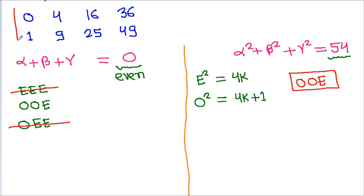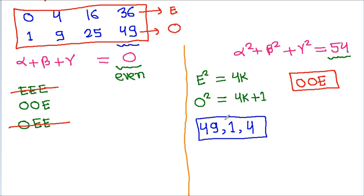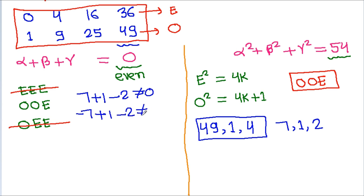By hit-and-trial, the possible perfect squares up to 54 are: 0, 1, 4, 9, 16, 25, 36, 49 (64 > 54). Starting with 49: taking 49 + 1 + 4 = 54 gives numbers 7, 1, 2 — but we cannot get 7 + 1 - 2 = 0, or -7 + 1 - 2 = 0, or 7 - 1 - 2 = 0, so this is not possible. Starting with 25: taking 25 + 25 + 4 = 54 gives numbers 5, 5, 2 — we cannot get alpha + beta + gamma = 0, so this is also not possible.